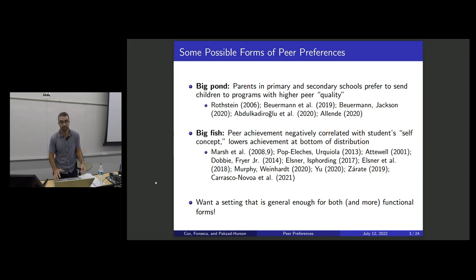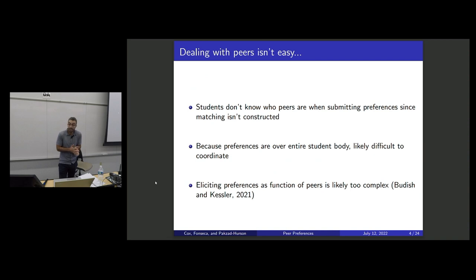And so we're going to study peer preferences of this type, which is I care about the distribution of peers somehow, but without putting too many restrictions on it. But dealing with peers really isn't an easy problem. You don't know who your peers are going to be in our classic school choice setup because the matching isn't created yet. Everything's done all at once.